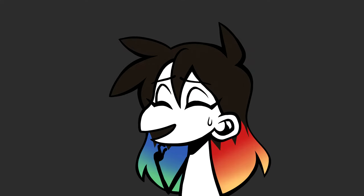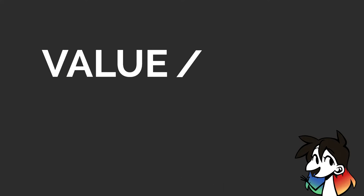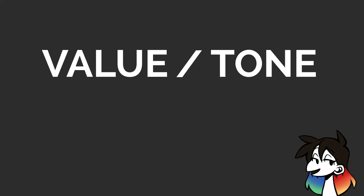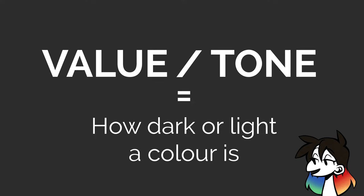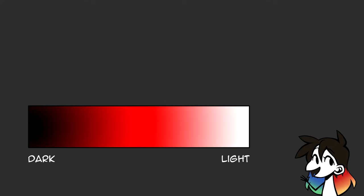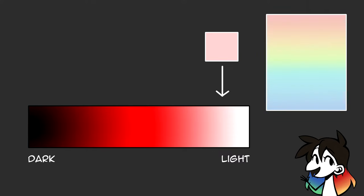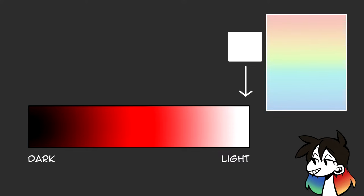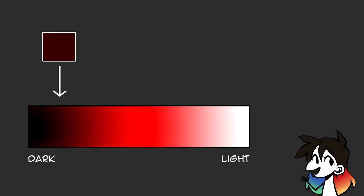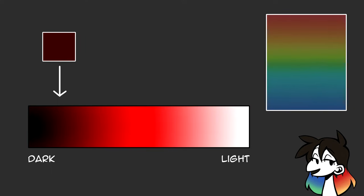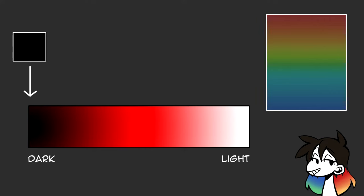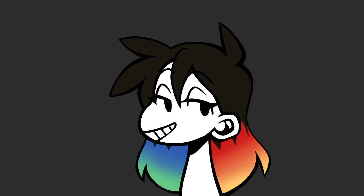To summarize: value, which can also be called tone, is just how light and dark the colors of a piece are. If we put red on a value scale, lighter reds have lighter values — with white being the lightest value possible. Darker reds have darker values, with black being the darkest. Value usually goes hand in hand with the principle of design called contrast, so let's talk about how they work together.